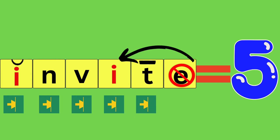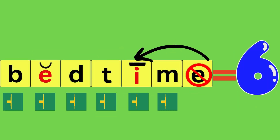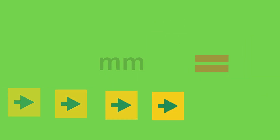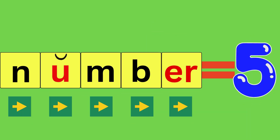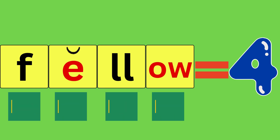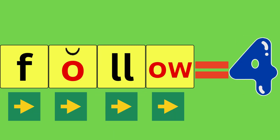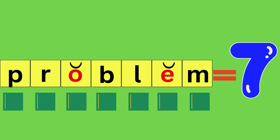Invite, I-N-V-I-T, invite — how many sounds did you hear? Five. Bedtime, B-E-D-T-I-M, bedtime — how many sounds did you hear? Six. Mammal, M-A-M-U-L, mammal — how many sounds did you hear? Four. Number, N-U-M-B-R, number — how many sounds did you hear? Five. Fellow, F-E-L-O, fellow — how many sounds did you hear? Four. Chapter, Ch-A-P-T-R, chapter — how many sounds did you hear? Five. Follow, F-A-L-O, follow — how many sounds did you hear? Four. Problem, P-R-A-B-L-E-M, problem — how many sounds did you hear? Seven.